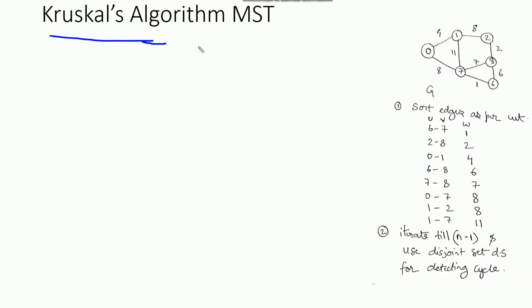The prerequisite for this video is to understand the concept of disjoint set data structure, because that data structure is very helpful to detect the cycle in a graph in logarithmic time. In my previous video I have already explained all the concepts required to understand the implementation of Kruskal's algorithm — the basics of disjoint set, find and union operations, and their optimizations. If you have not seen it, I recommend you watch that video first, because we are going to use that concept to implement Kruskal's algorithm.